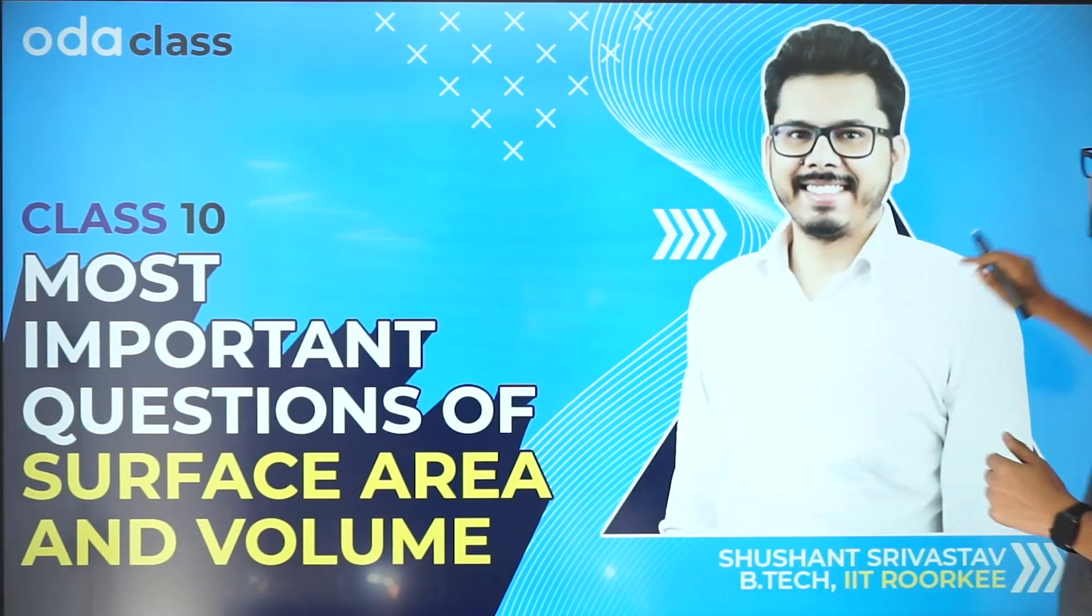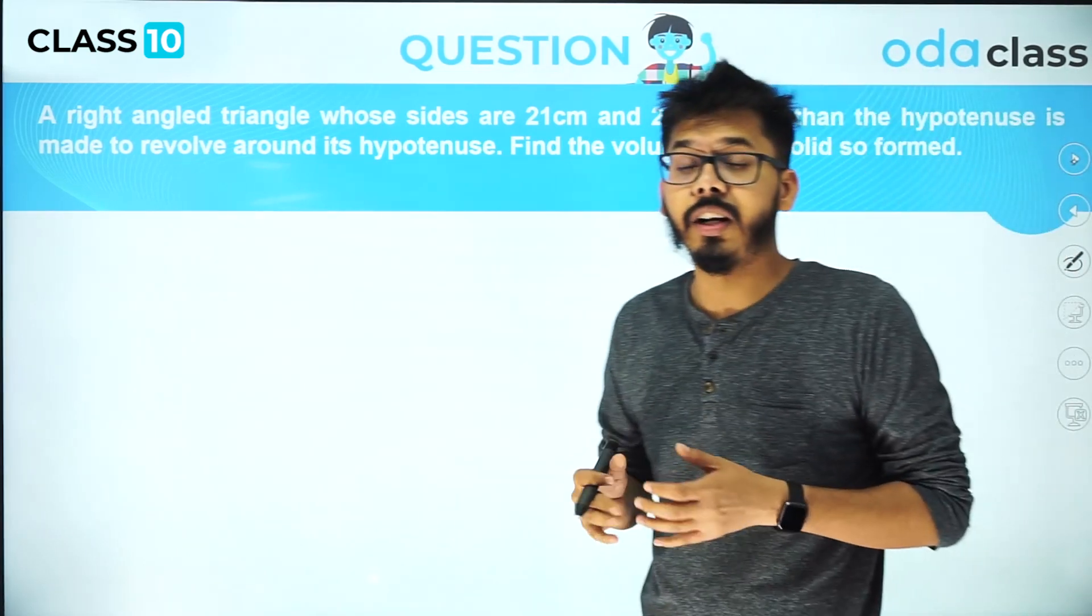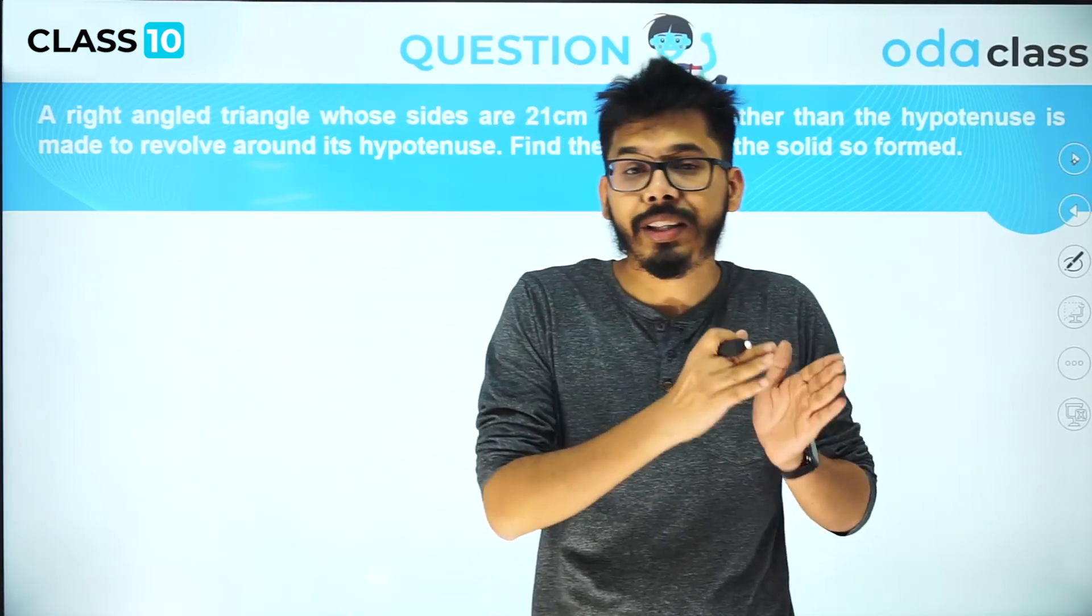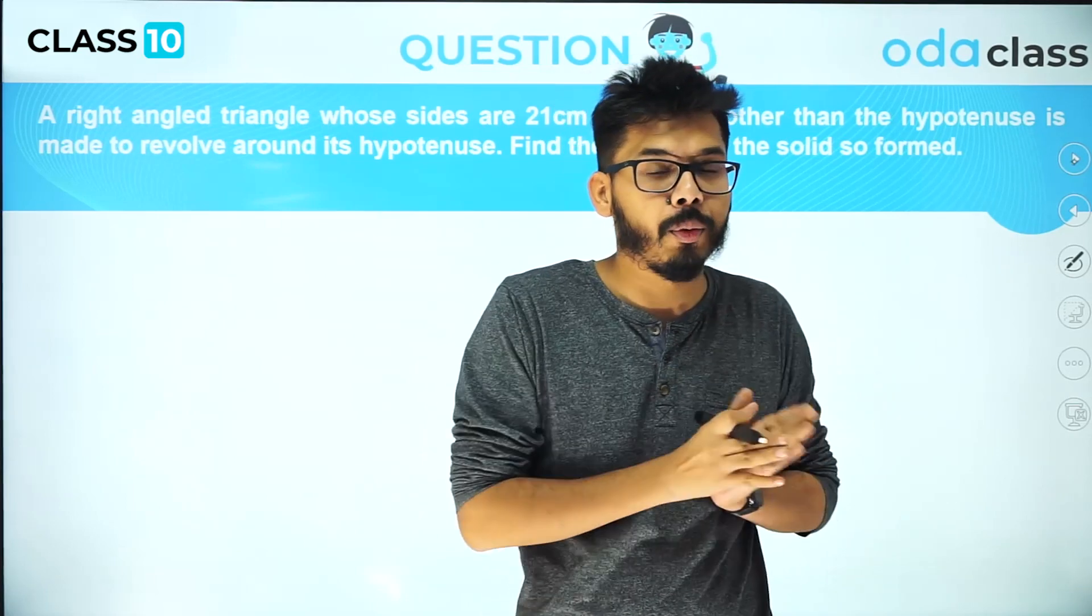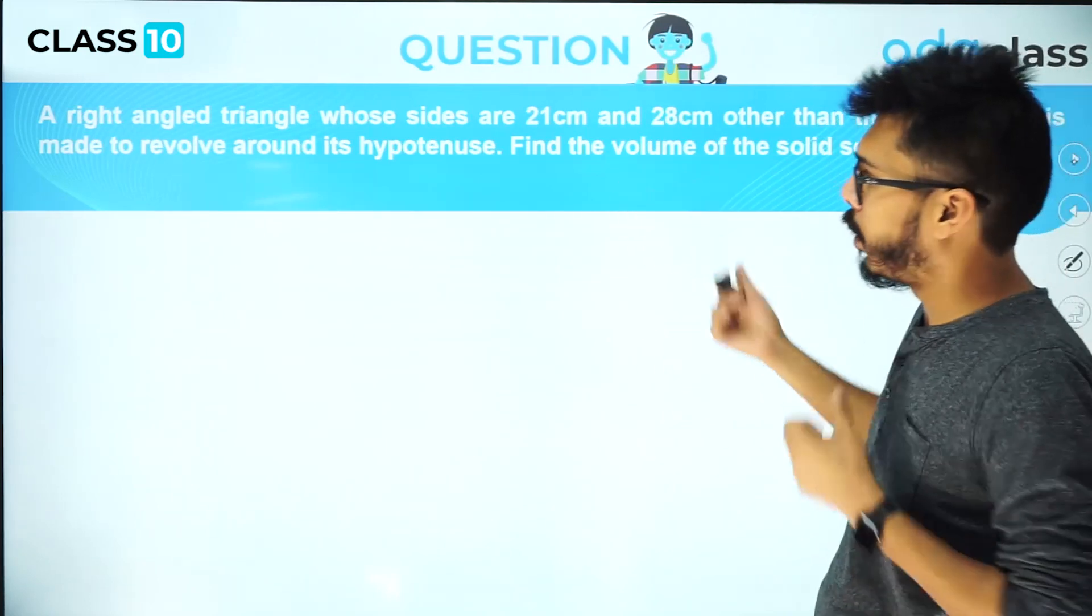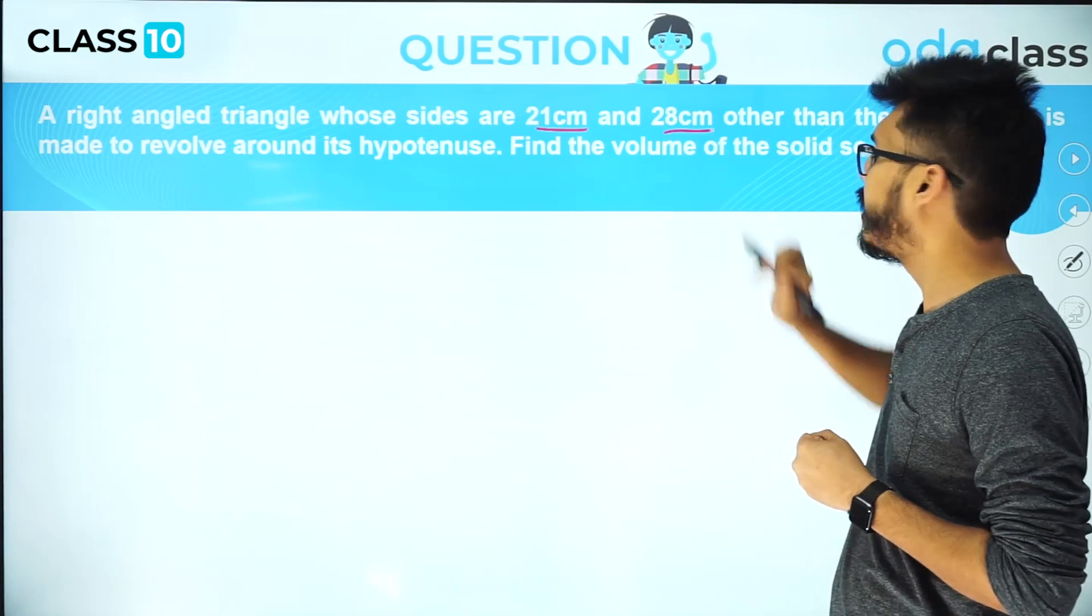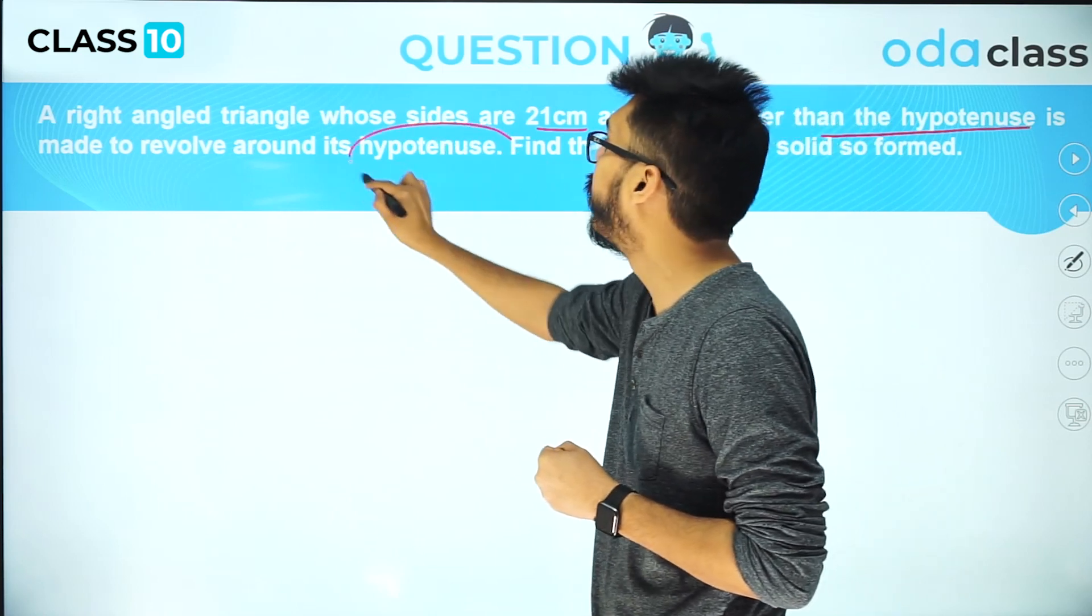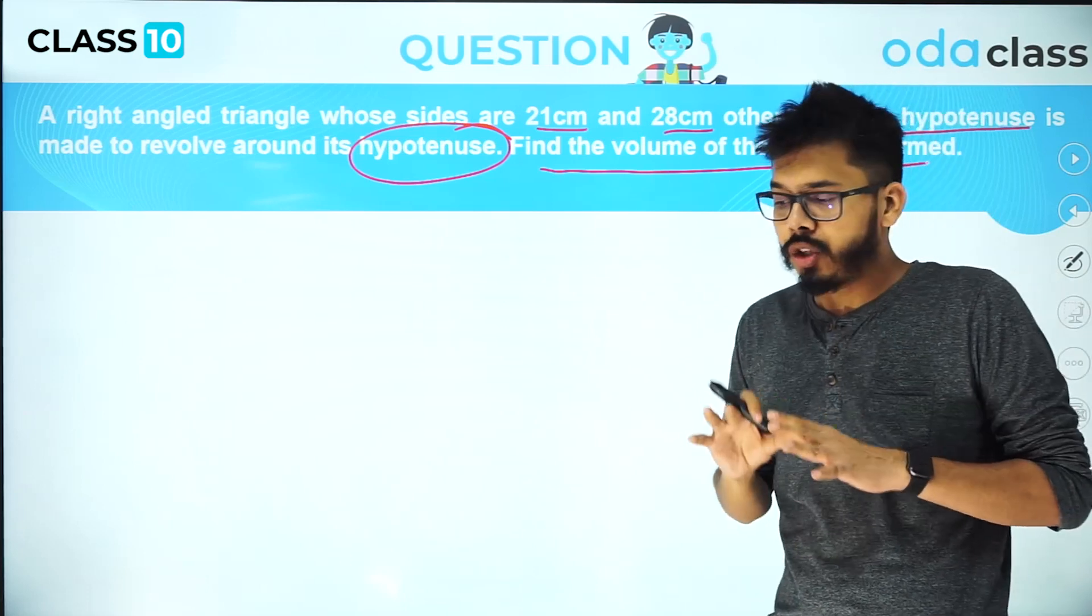Let's begin with the first question. The first question I've selected is related to cone. Even though we all know the volume of the cone is 1/3 π r² h, we always tend to make mistakes in these kinds of problems. This is a little bit twisted problem. A right-angled triangle whose sides are 21 centimeter and 28 centimeter other than the hypotenuse is made to revolve around the hypotenuse. We are supposed to find the volume of solid.